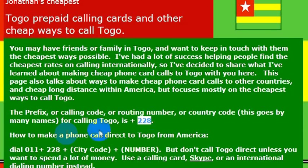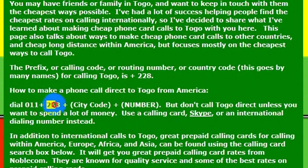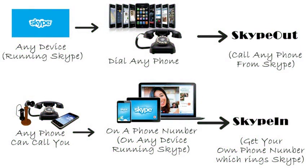So if you want to dial directly using a landline, you would dial 011 and then 228 being the country code, and then the phone number that you want to dial. The country code for Togo is 228. But I wouldn't really recommend calling direct.